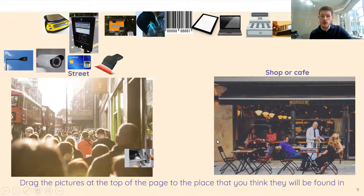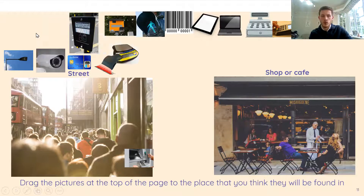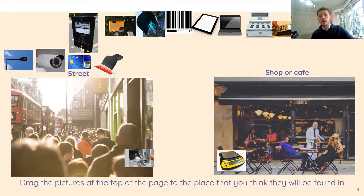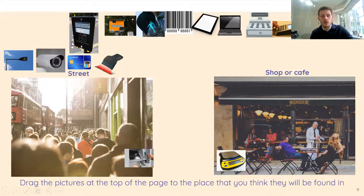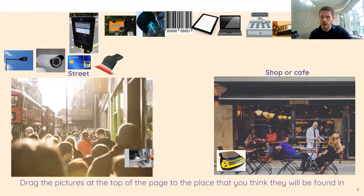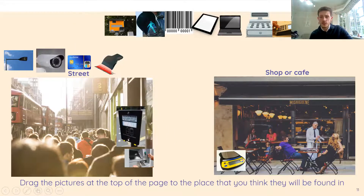What about the weighing scales? Would we find them in the street or in a shop? We're going to find them in a shop or a cafe — you might find them in the post office, where they weigh your parcel to see how much it costs to send. What about the pedestrian crossing button where you press it to cross the road? It's got its own computer that tells it when you can cross. You'd find that in the street — you don't see roads inside cafes!